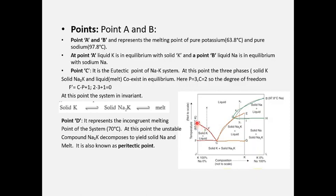Now discussing the key points. Point A represents pure potassium with a melting point of 63.8°C, and point B represents pure sodium with a melting point of 97.8°C. At point A, solid potassium is in equilibrium with liquid potassium. At point B, solid sodium is in equilibrium with liquid sodium.